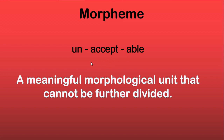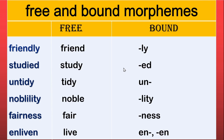A morpheme is the basic part of a word — you cannot divide it further. If you break U-N, then you get two sounds, but no meaning. A morpheme is the smallest meaningful unit. This is similar to a phoneme: a phoneme is the basic sound unit we cannot break further. There can be two kinds of morphemes: free morpheme and bound morpheme.